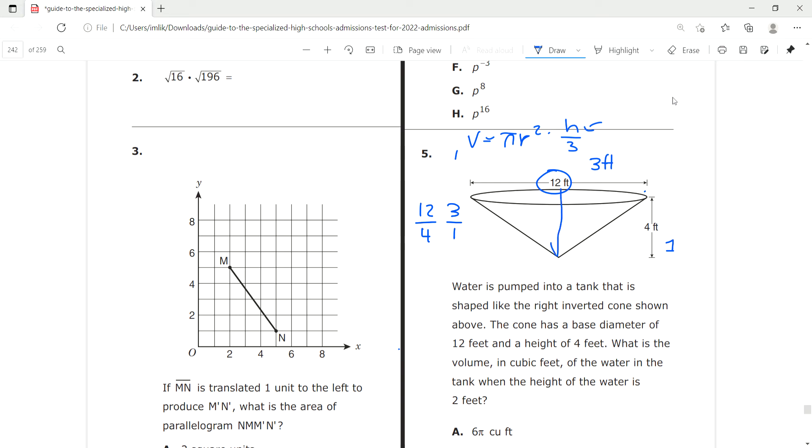So if we gain 1 foot here, it's going to be 1.5 feet here and 1.5 feet here. If we gain another foot, it's going to be 3 feet here and 3 feet here. So now that we have our proportion, we can finally solve this.